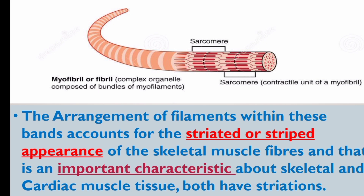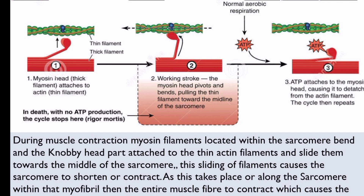The sarcomere segments produce a dark band and light band pattern, giving a striated or striped appearance to skeletal muscle fibers. Striations are an important characteristic of both skeletal and cardiac muscle tissue. The sarcomere has thick myosin filament and thin actin filament that help muscle contraction.